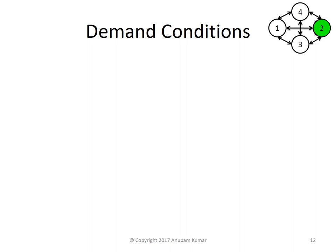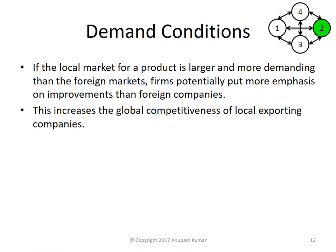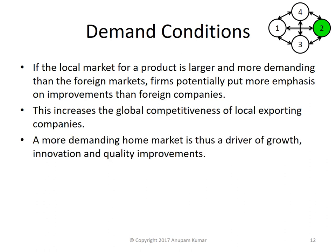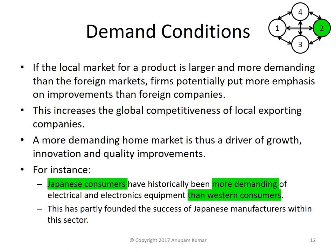Moving on to the demand conditions. If the local market for a product is larger and more demanding than the foreign markets, firms potentially put more emphasis on improvement of their products compared to foreign companies. This increases the global competitiveness of local exporting companies. A more demanding home market is a driver of growth, innovation, and quality improvement. For example, Japanese consumers have historically been more demanding of electrical and electronics equipment than their Western counterparts, which has partly founded the success of Japanese manufacturers within this sector.